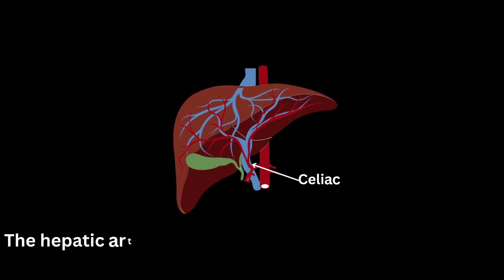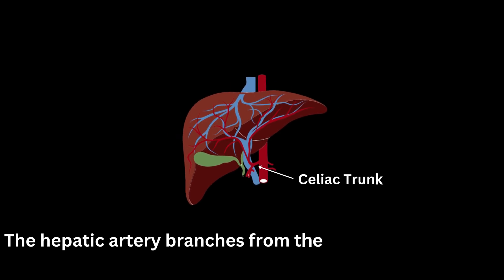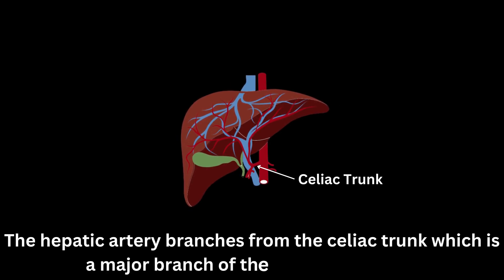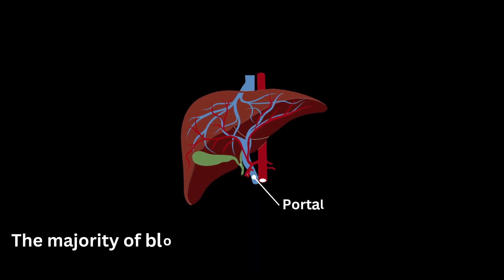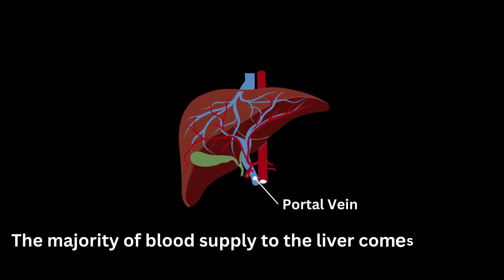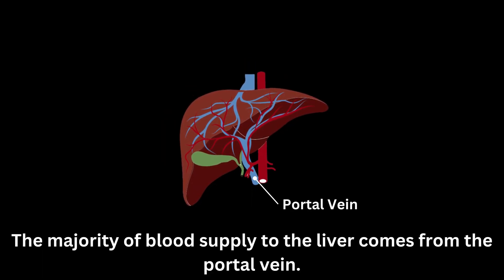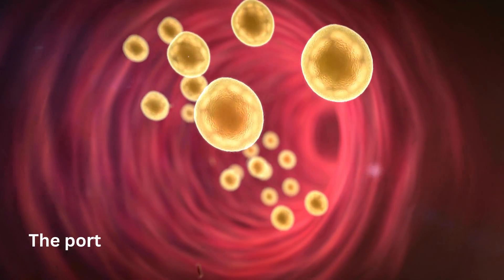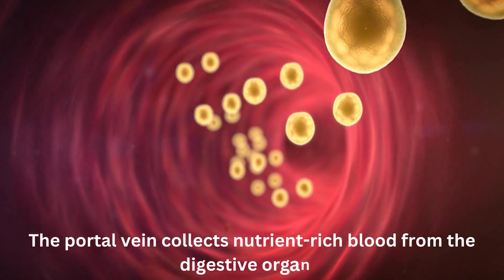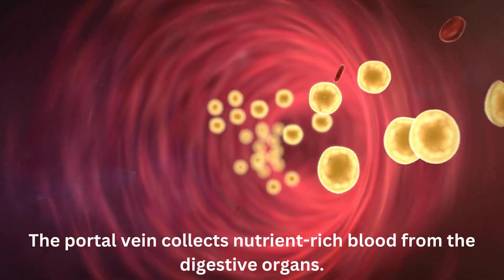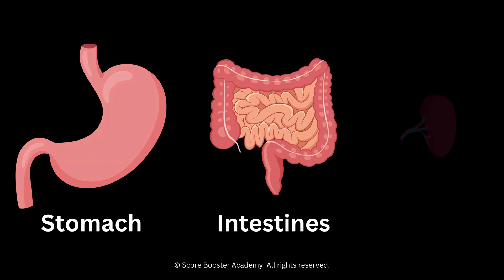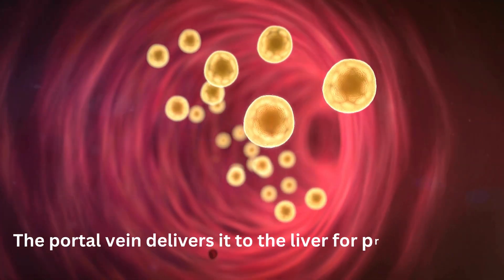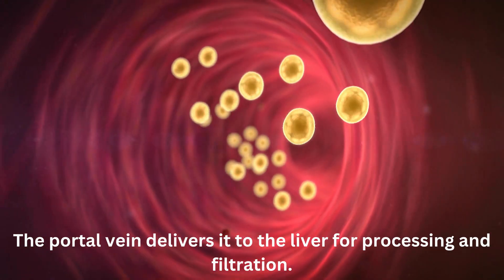The hepatic artery branches from the celiac trunk, which is a major branch of the abdominal aorta. The majority of blood supply to the liver comes from the portal vein. The portal vein collects nutrient-rich blood from the digestive organs, including the stomach, intestines, and spleen, and delivers it to the liver for processing and filtration.